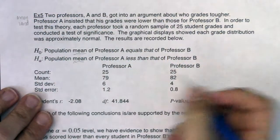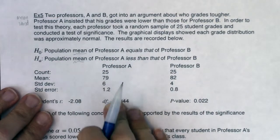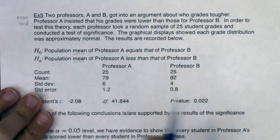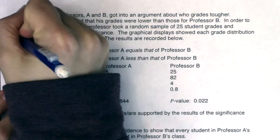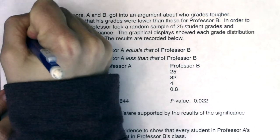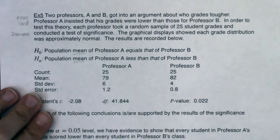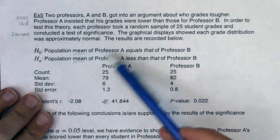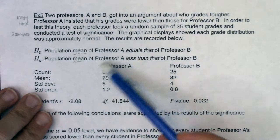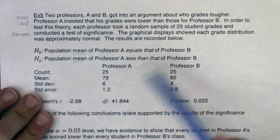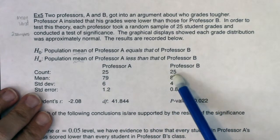I have two sets of data right because we have the 25 students from Professor A's class and the 25 students from Professor B. So I have two samples, two sets of data. I need to decide if they're independent or paired right. That's always a really good question to ask. So do I think that the results from Professor A, how Professor A graded, have any effect on how Professor B graded?